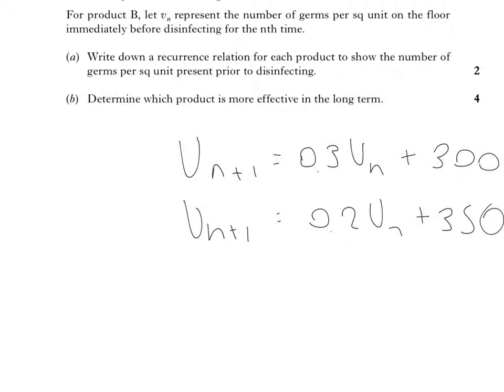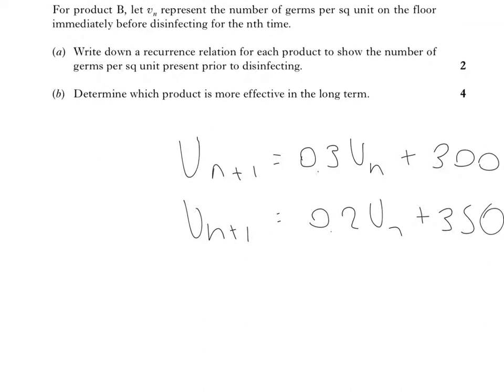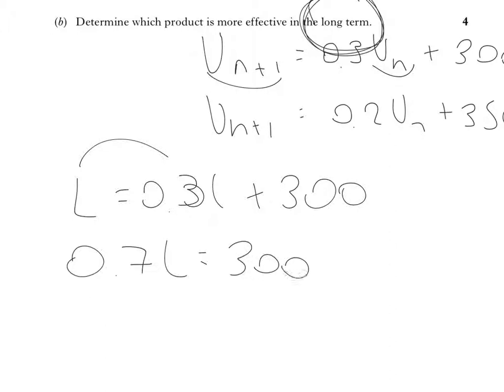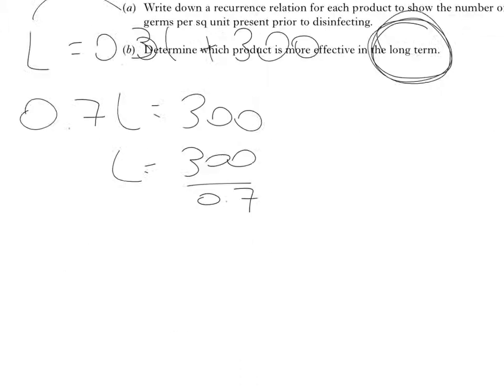Part B, determine which product is more effective in the long term. Well, that's really just asking me to investigate the limit. So, I'm going to look at the limit for the first one. So, remember, when we've reached a limit, the next term is the limit, so that's going to be L equals 0.3L plus 300. Bring that over, and that's going to be 0.7L equals 300. L is equal to 300 divided by 0.7. That will give me 428.6.